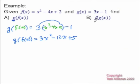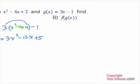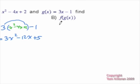For part b here, f of g of x, we're going to want to concentrate on the f function first. So we'll say f of x is equal to something squared minus 4 times something plus 2.